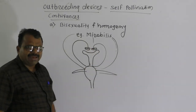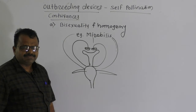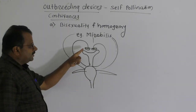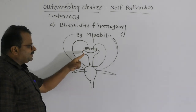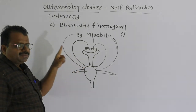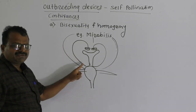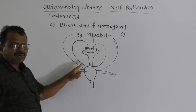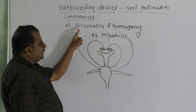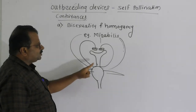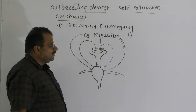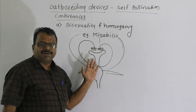In Mirabilis, the anthers lie very close to the stigma. If flowers are bisexual and both sex organs mature at the same time, it helps to achieve self-pollination.